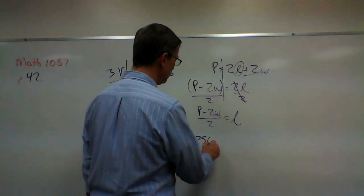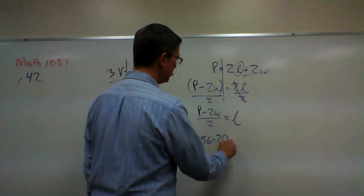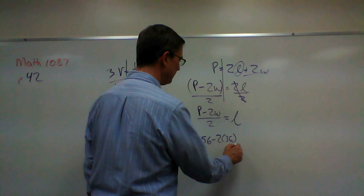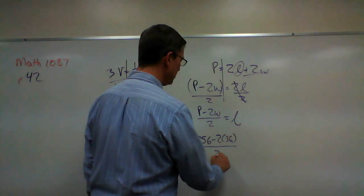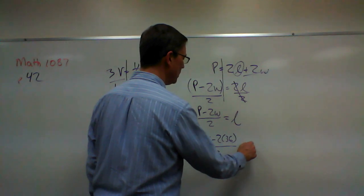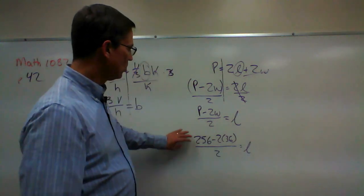So we can plug in the 256 minus two times 36. Solve that whole thing. Take that answer and divide by two and you'll know the length. So solve the whole top.